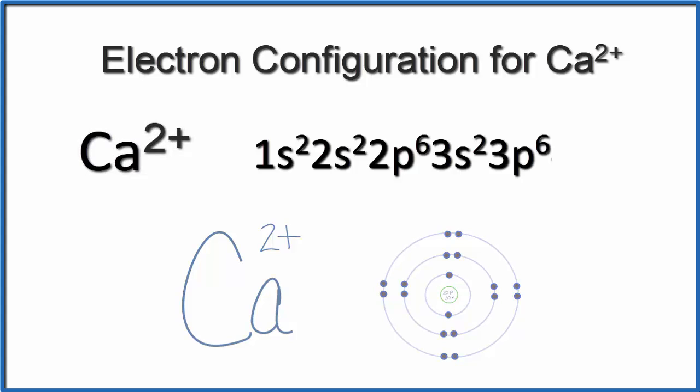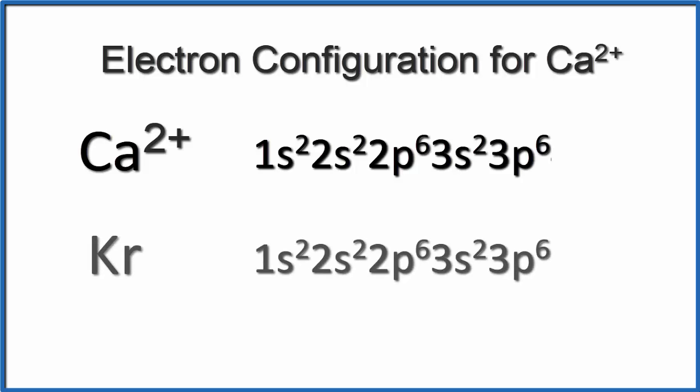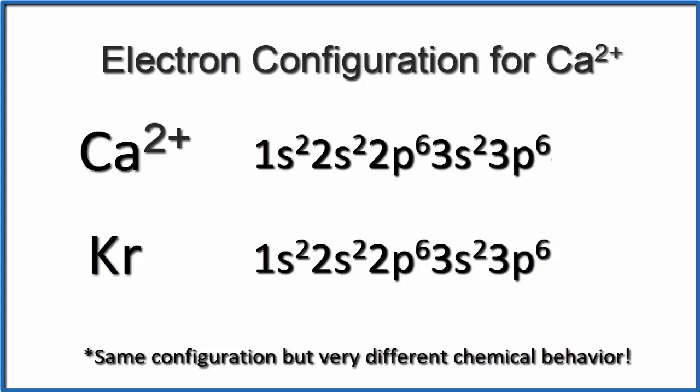If we compare the electron configuration for Ca2+ to krypton, which is a noble gas in the same period or row on the periodic table, you'll see they have the same electron configuration. So by losing those 2 valence electrons, calcium, Ca2+, now has the same configuration as a noble gas, and that's very stable. It has a full outer shell with 8 valence electrons.